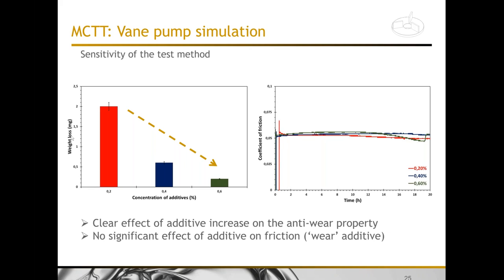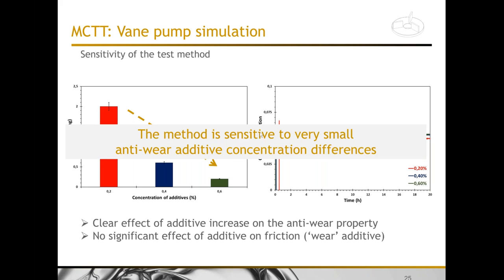When plotting weight losses, you can see that increasing the additive concentration brings wear and weight loss to very low levels. Also interesting — and something you don't get from the Conestoga component test — we can measure the coefficient of friction during the test. In this case, adding an anti-wear additive doesn't significantly change the coefficient of friction. But this methodology could also be used to evaluate friction additives: if you want to reduce energy losses in a pump system, you could add friction modifiers and evaluate whether they actually reduce friction. The method is very sensitive to even very small additive concentrations.